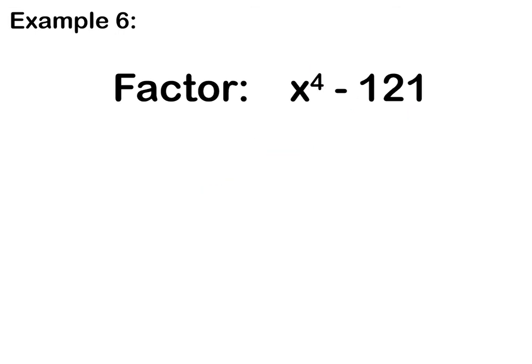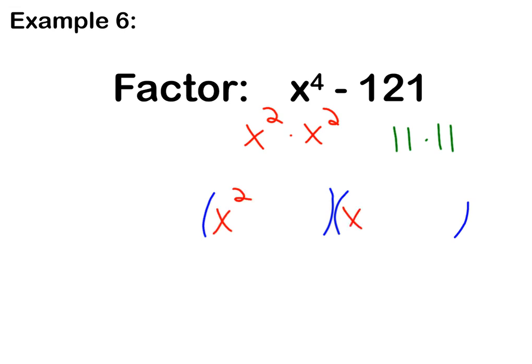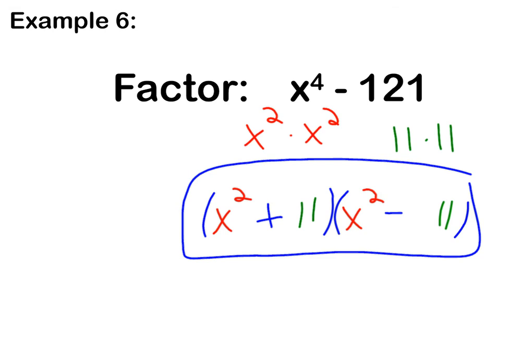Pause the video now to take a look at example 6. Press play to go over your answer — be awesome, I believe in you. So I know this is x squared times x squared, and I know this is 11 times 11. I'm going to set up my parentheses: first term goes in front, second term goes in back, finish with opposite signs. Final answer.